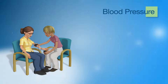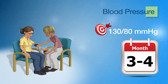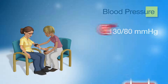It is recommended that you have your blood pressure checked every 3 to 4 months, ideally when you visit your doctor for your HbA1c check. The general blood pressure target for people with diabetes is a systolic blood pressure of 130 mmHg over a diastolic blood pressure of 80 mmHg. Talk to your doctor about your individual target, as this may change depending on your age and health.